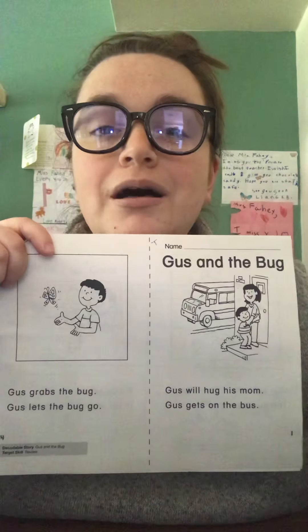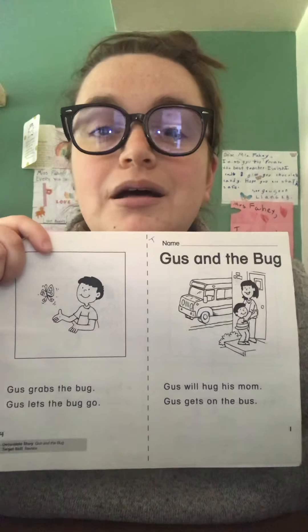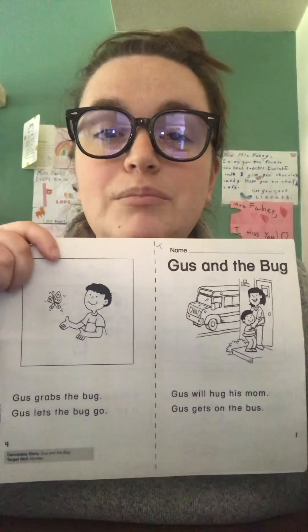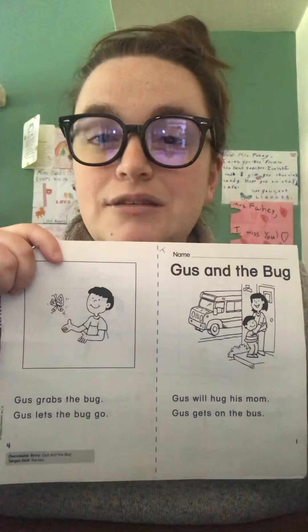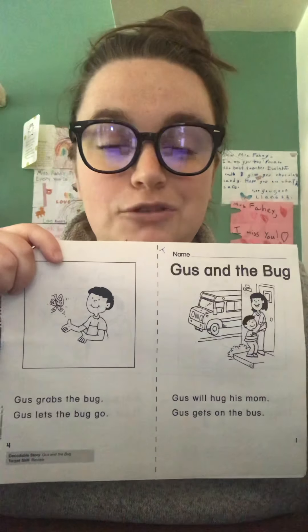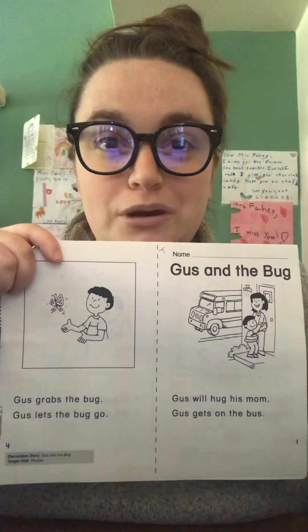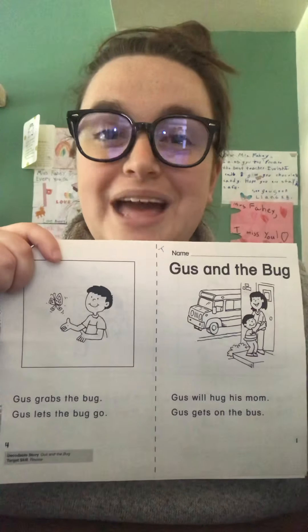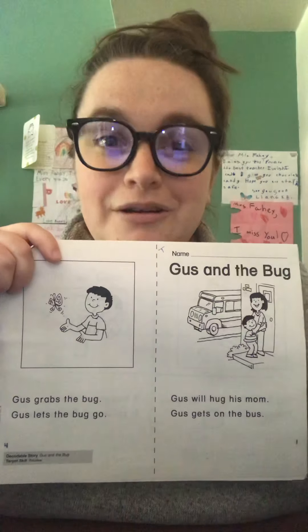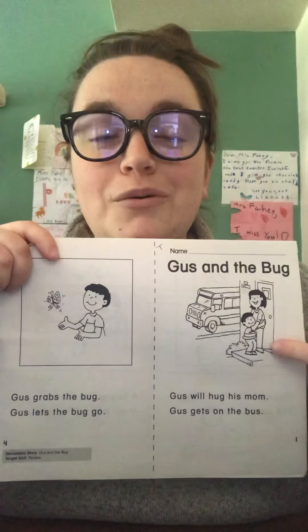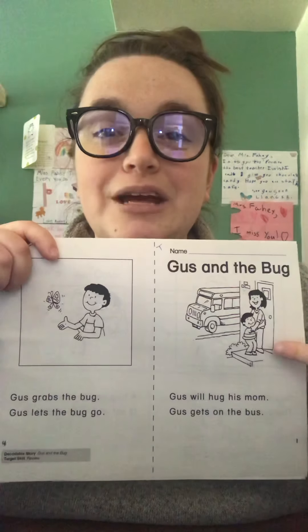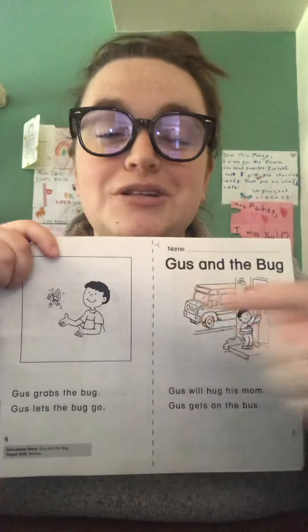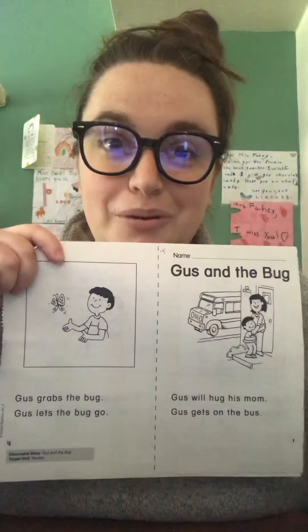Gus and the Bug — find out what's going to happen with Gus and the Bug. And then I would like you to take any color crayon you like and underline all of the words with the short U. Be good detectives and find all of the words with the short U. Underline them any color before, of course, coloring the pictures in your booklet.